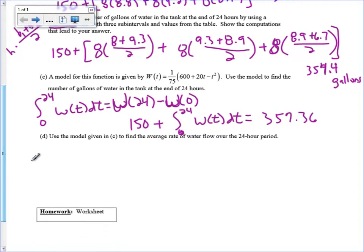The last thing is, again, something old. We've done this before. We're going to do the average rate of water flow using that model. So that means we have to do 1 over B minus A times the integral from A to B of that model that they gave me of W of T dt. And I did this on my calculator as well. And that says 8.64.